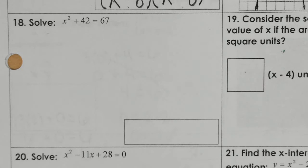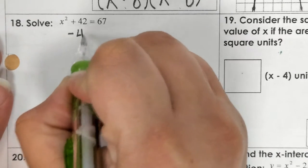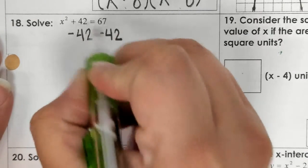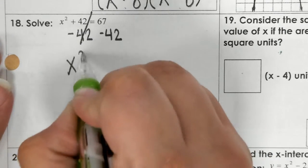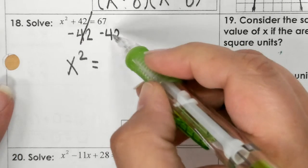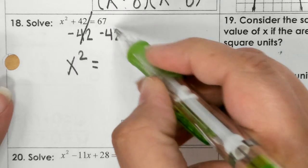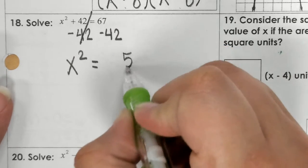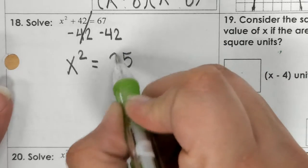For problem 18, you need to solve by finding square roots. What I would do is add or subtract to both sides. In this case, I need to subtract 42. If I take 67 minus 42, we would get 5 and 2, so that's 25.